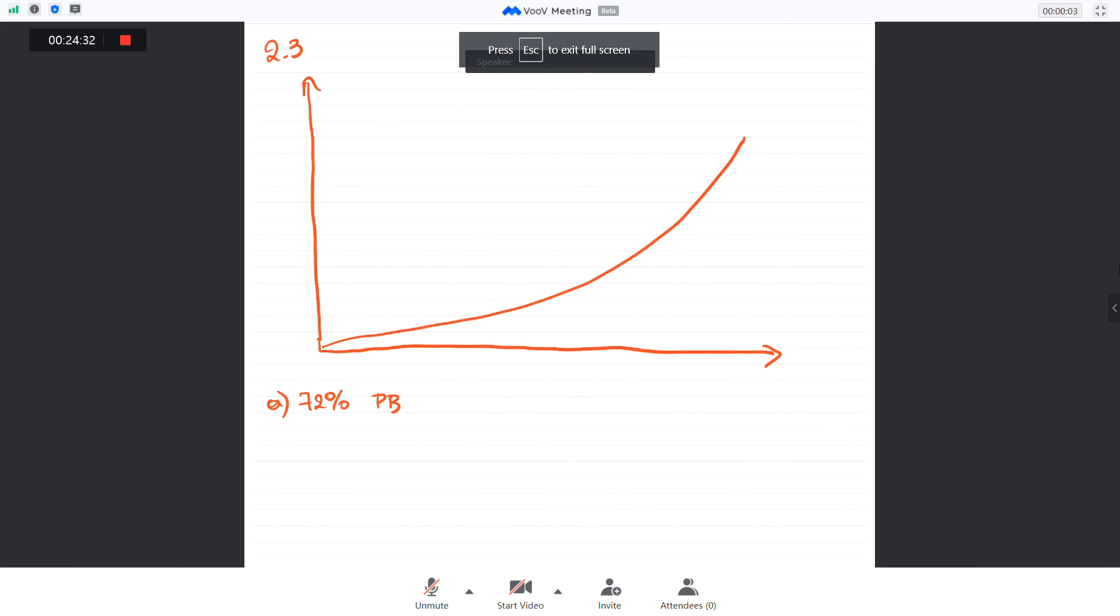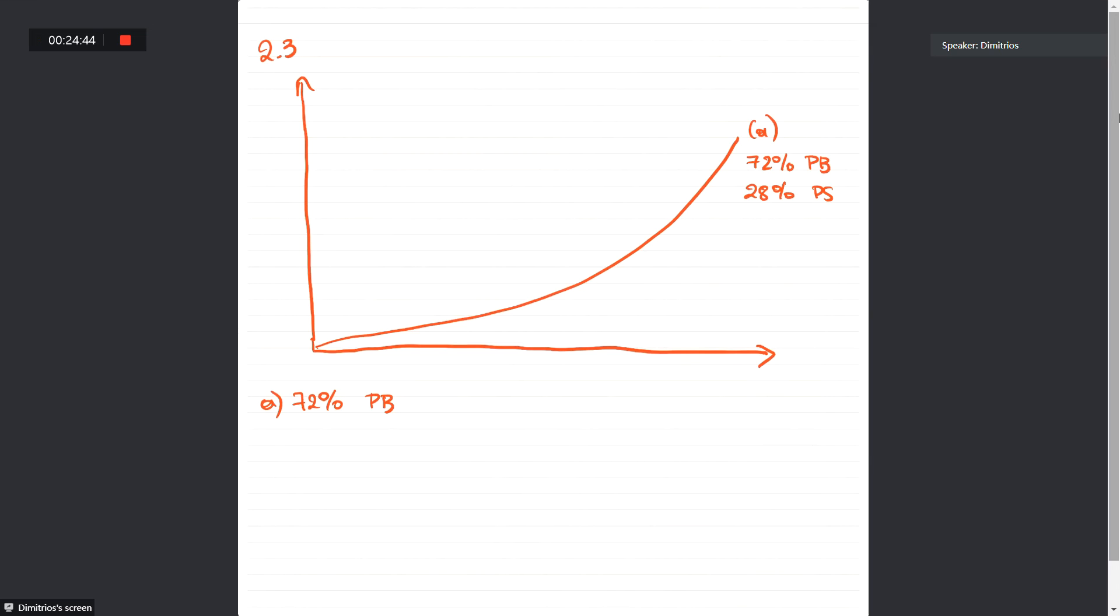This will lead to a graph that looks like that. And essentially in this case, polystyrene forms the dispersed phase. So we have a rubber-like deformation.